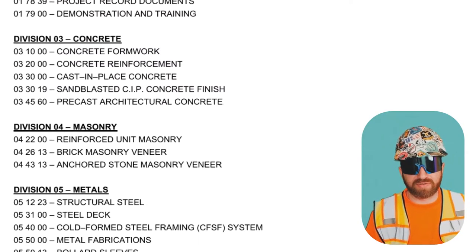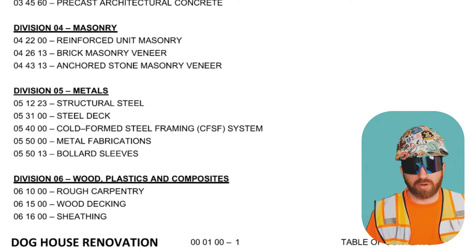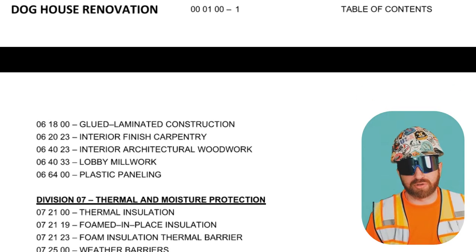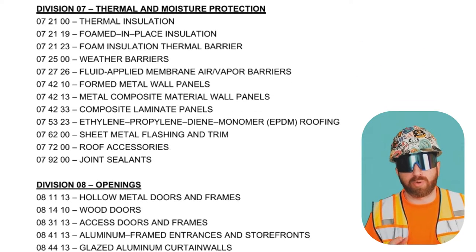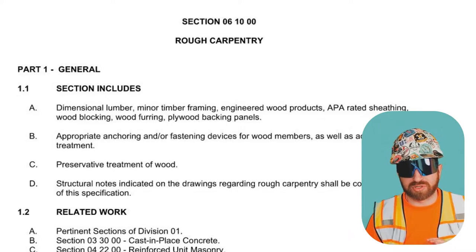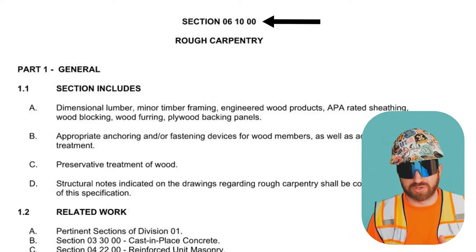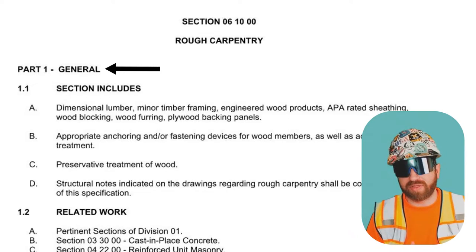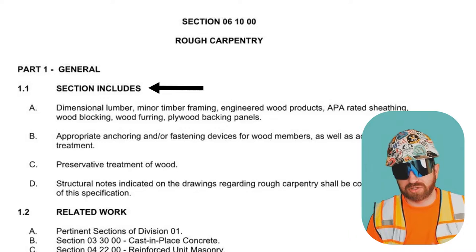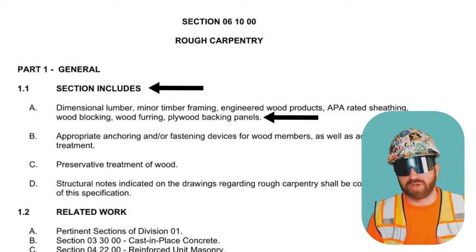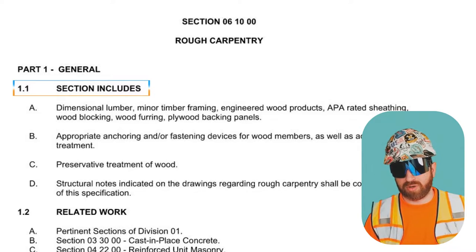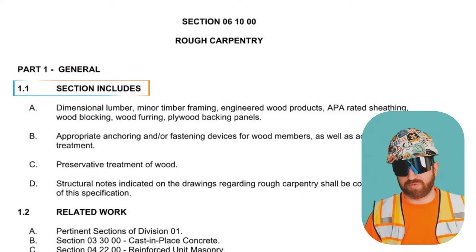The division sections following division 00 and division 1 go further in depth into those particular scopes of work. I've jumped into the rough carpentry section, which is section 06100, and we're on page one. As you can see, it's broken into different parts. The first part is general, which contains subsections, subsections from that, and so on. Section 1.1 includes everything that you'll find in this specification section.